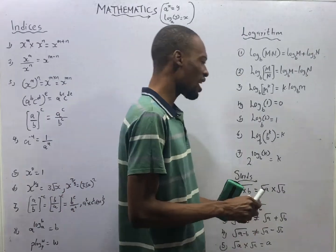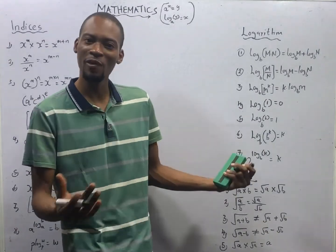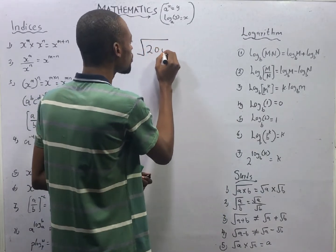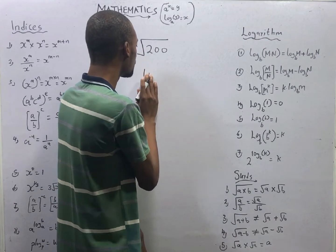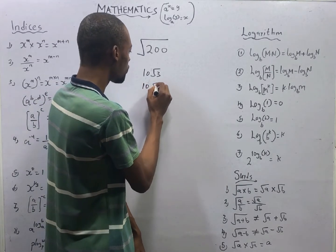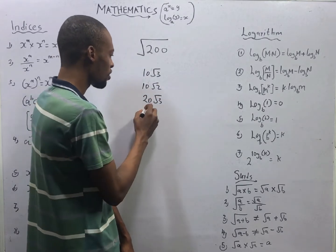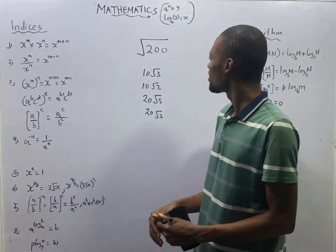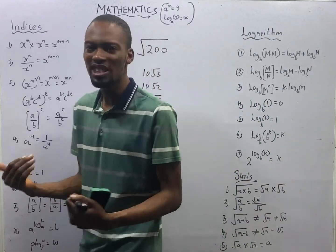After solving a mathematics problem — a physics problem, variation question, integration question, or whatever — you arrive at an answer: square root of 200. Then you see options: A) 10√3, B) 10√2, C) 20√3, D) 20√2. You begin to wonder what is correct, especially in a situation where you don't have a scientific calculator.